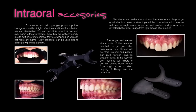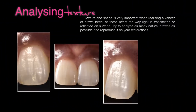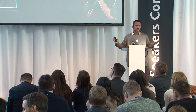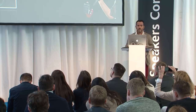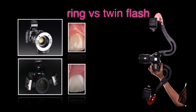We need intraoral photography to analyze the pink, to see different textures, and to learn from nature to reproduce — whether for direct or indirect restorations. I don't use the ring flash much. Ring flash is recommended for surgeries and posterior area photography, but I prefer twin flash for the anterior area because a ring flash creates huge reflections in the anterior vestibular area. With twin flash I have small reflections only on the sides and can study the internal structure of the tooth — the halo effect, translucency, transparency, and mamelons.